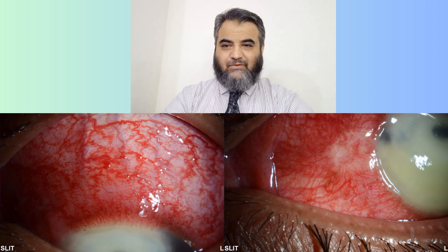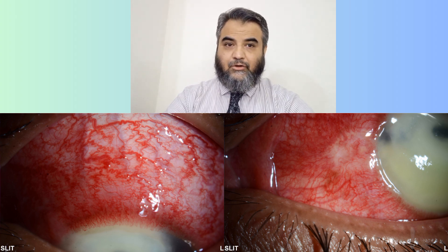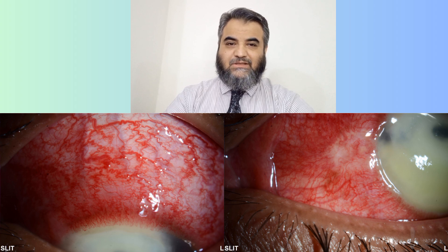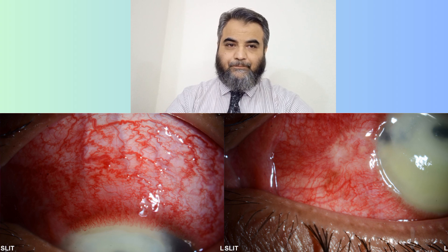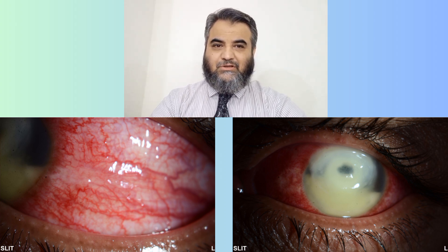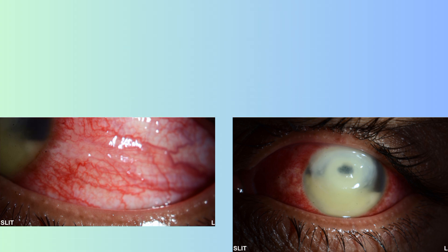These types of infections we can call stage three according to the modified Jones classification — grade three — when it is extensive. At any time we can say that the sclera can be involved if not properly treated. Basically all 360 degrees are inflamed: blood vessels are engorged, inflammation is ongoing, the eye is full of pus, and centrally there is corneal thinning which can lead to perforation.